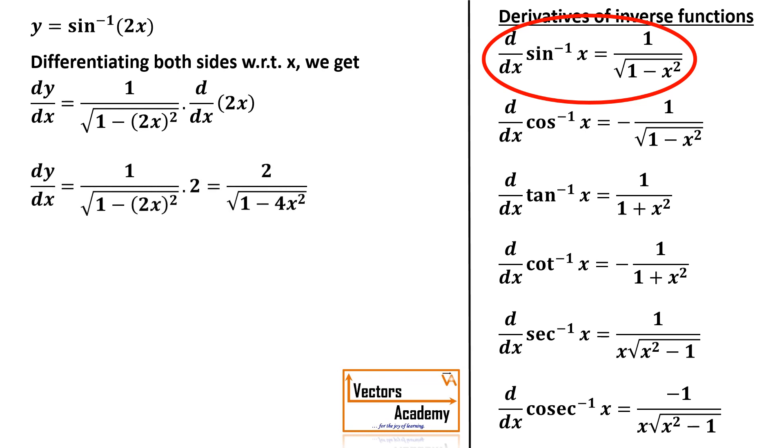And what is derivative of 2x? It's 2. Hence the answer is 2 upon root of 1 minus 4x square.